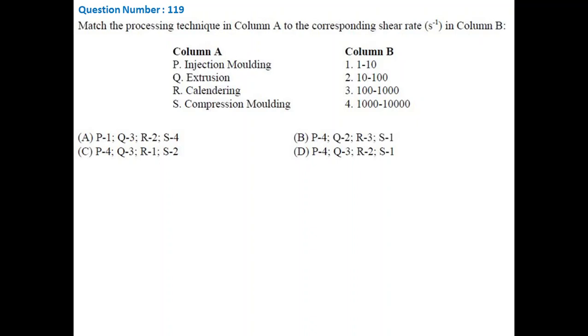This is a very interesting question. Here, we need to match polymer process to their respective shear rate. It is very difficult to assign any specific shear rate to a process, since different parameters can be changed to change the shear rate during processing. But processes can be arranged in terms of their relative shear rate range. So let's start from the bottom of the list. Compression molding is the process in which polymers are melted and compressed between two plates. So there is hardly any shear. Therefore, shear rate range for compression molding is 1 to 10.